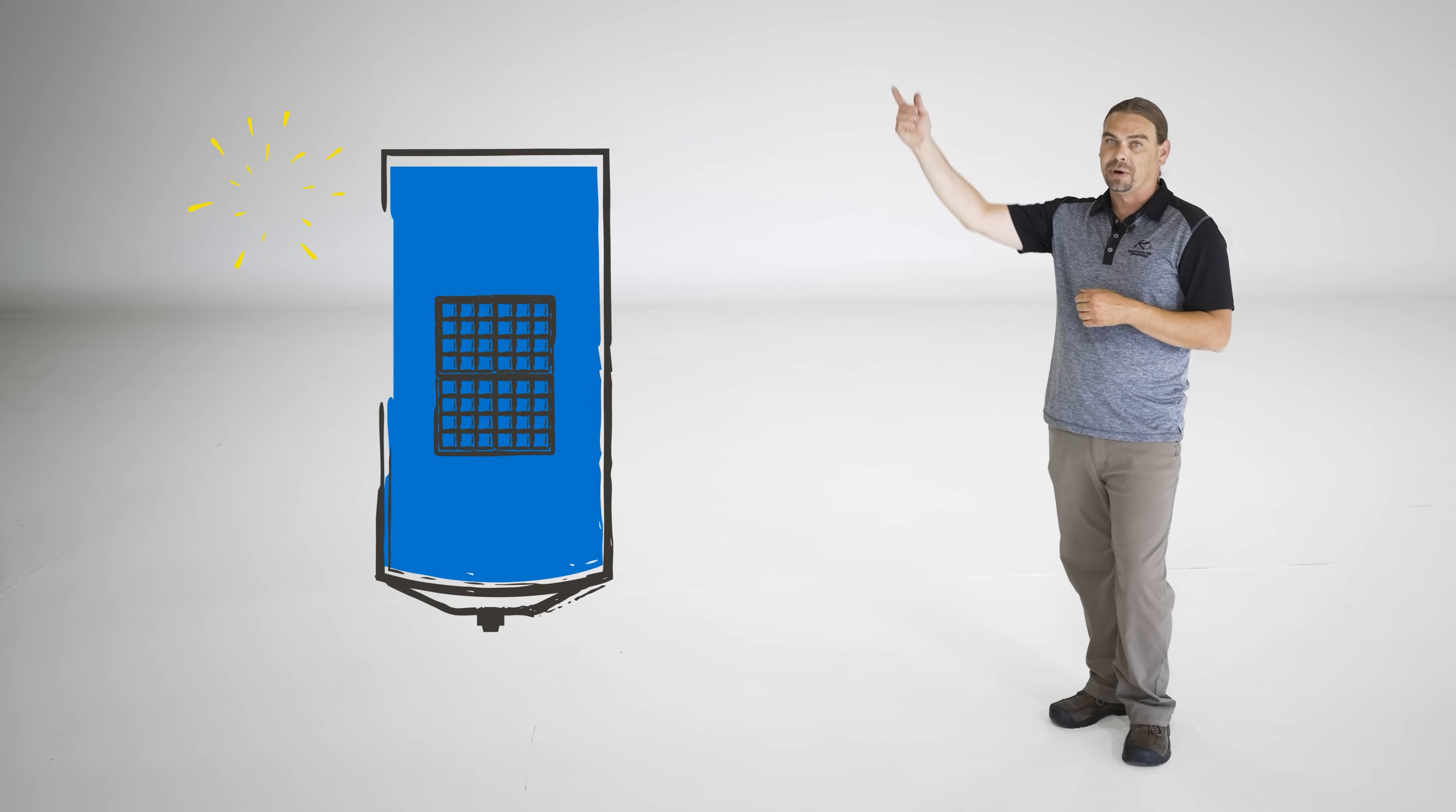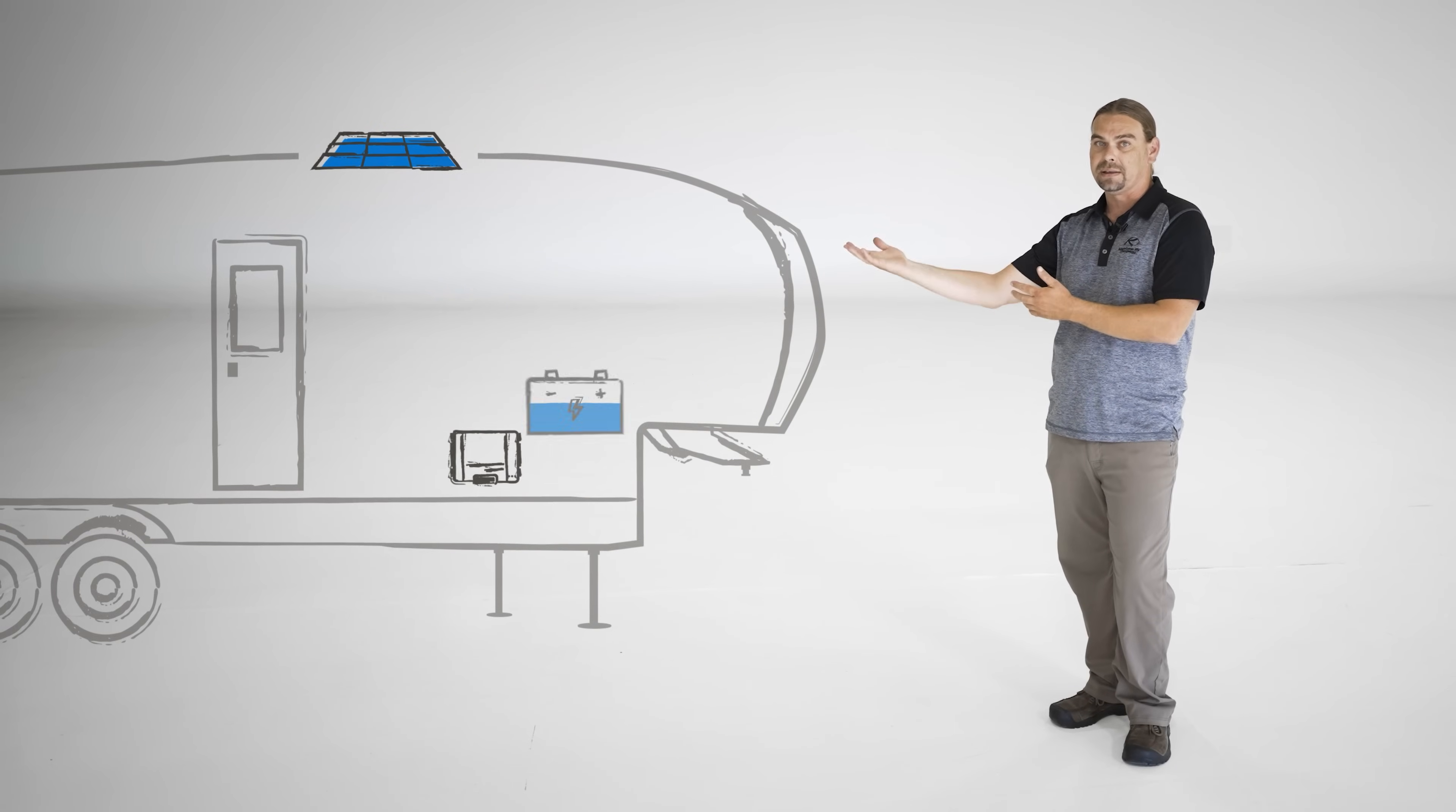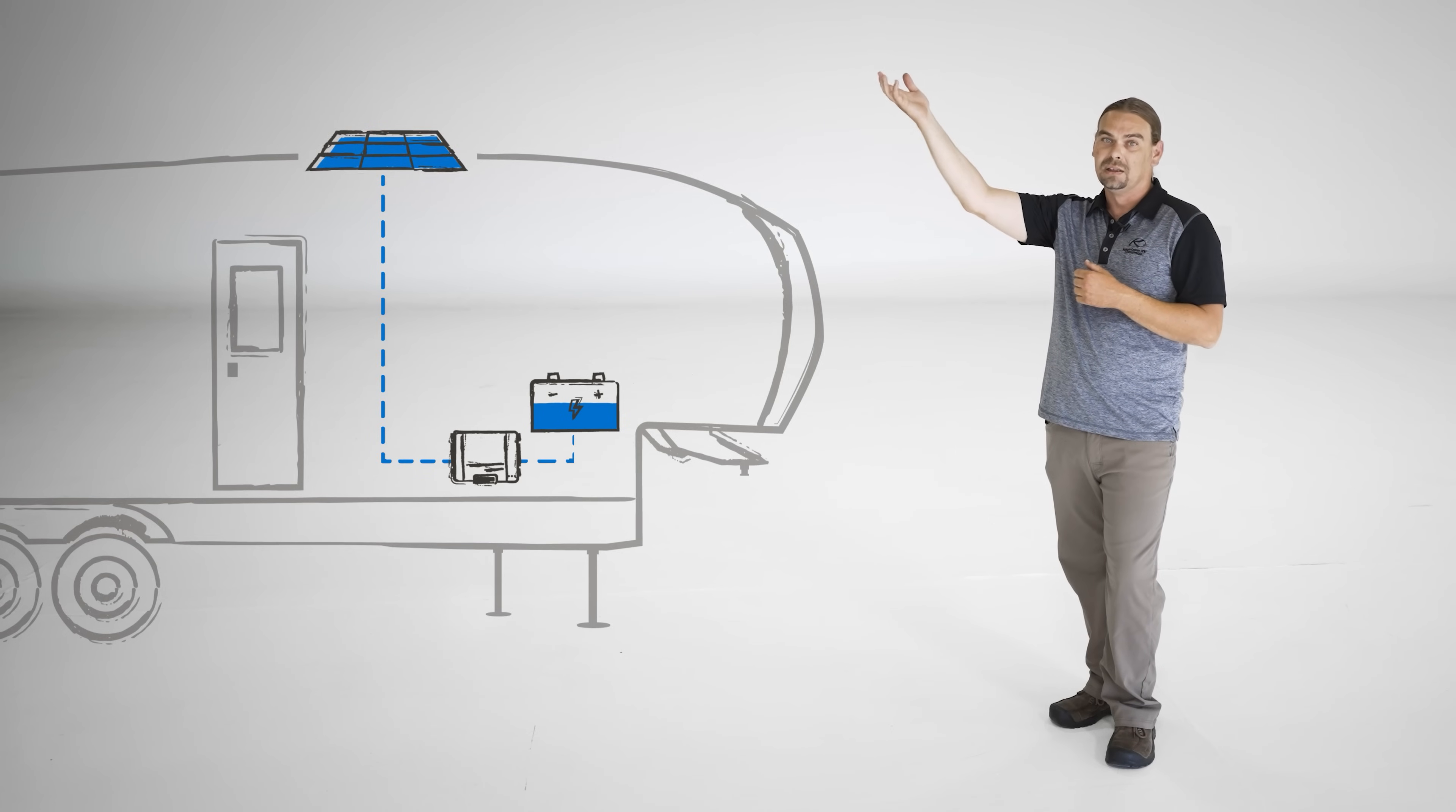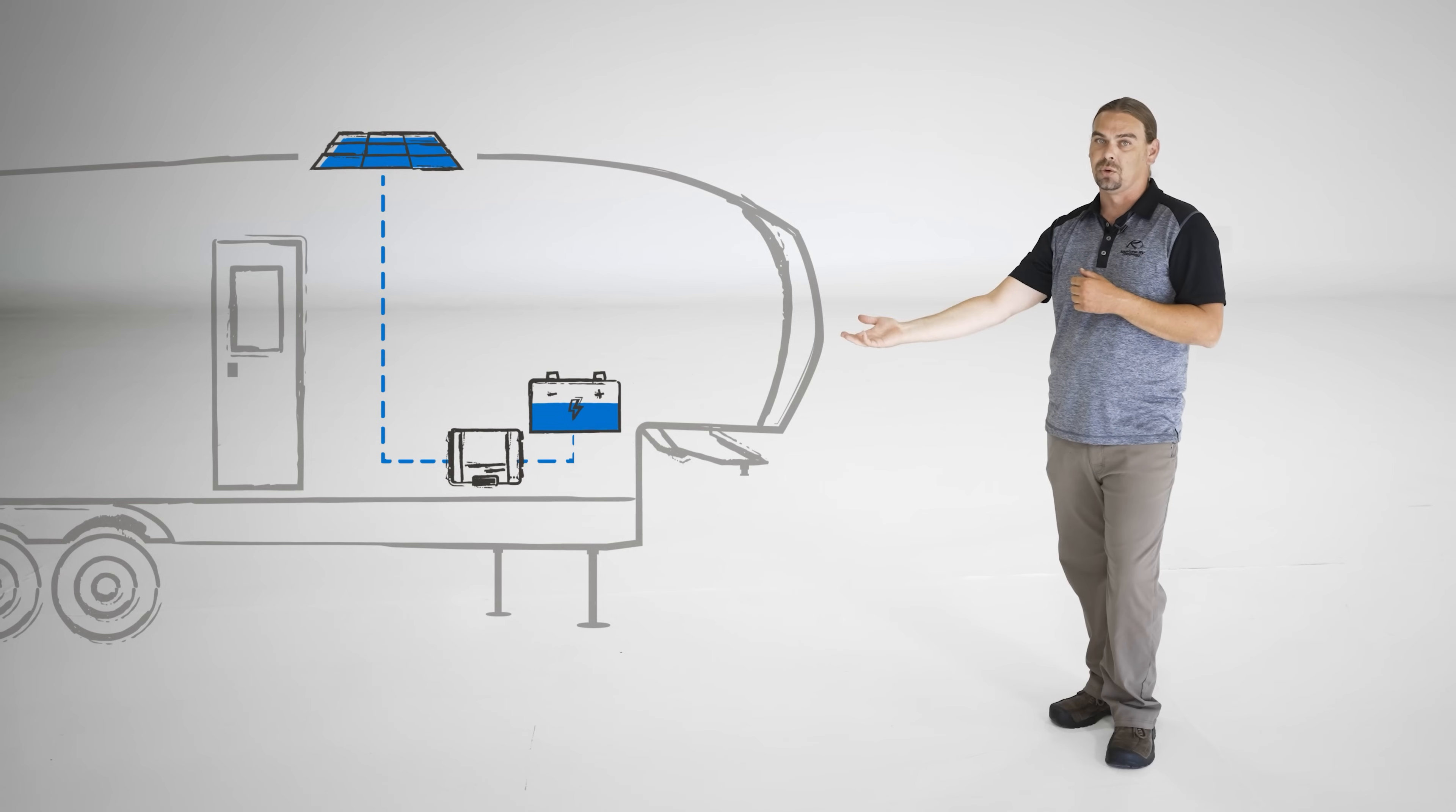In the case of solar, batteries are refilled by the sun shining down onto the solar panels. That energy is collected from the sun and sent to the battery. In an RV, it looks just like this: solar panels collect energy from the sun and send that energy through the charge controller to the battery for storage.